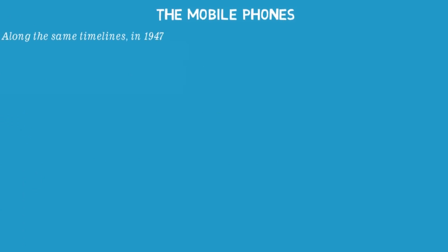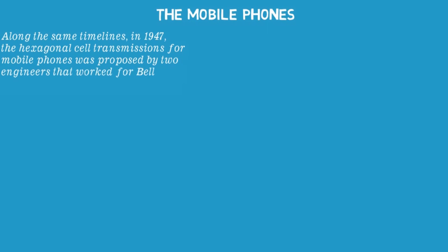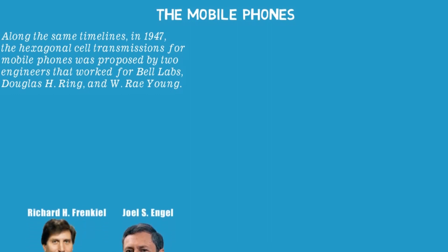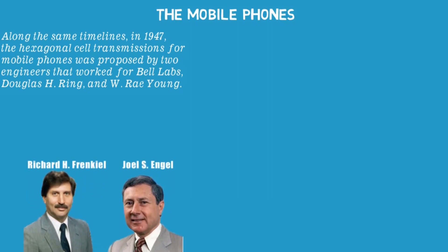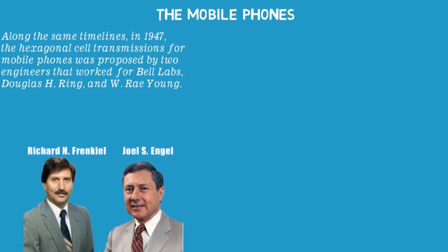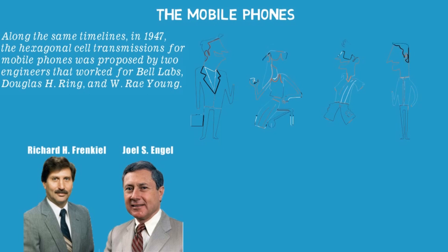Along the same timelines, in 1947, hexagonal cell transmission for mobile phones was proposed by two Bell Labs engineers, Douglas H. Ring and W. Ray Young. However, the technology to support mobile phones remained underdeveloped until 1960, when two other Bell Labs scientists, Richard H. Frenkiel and Joel S. Engel, built the supporting electronics. Today, the number of mobile phone users is about 5 billion. The telephone has been a great instrument supporting modernization, the development of suburbs, and communication between homes and businesses.